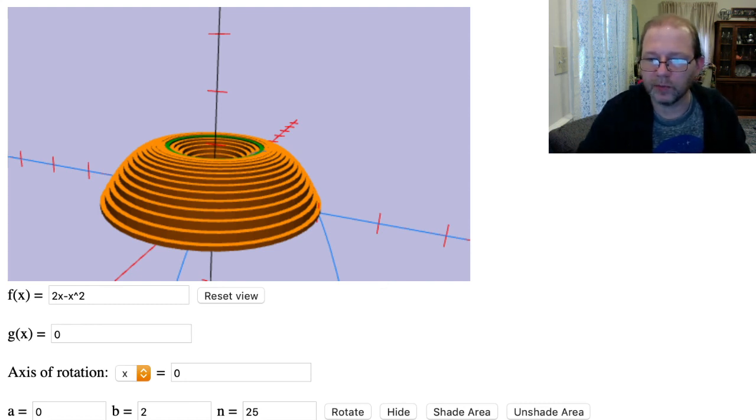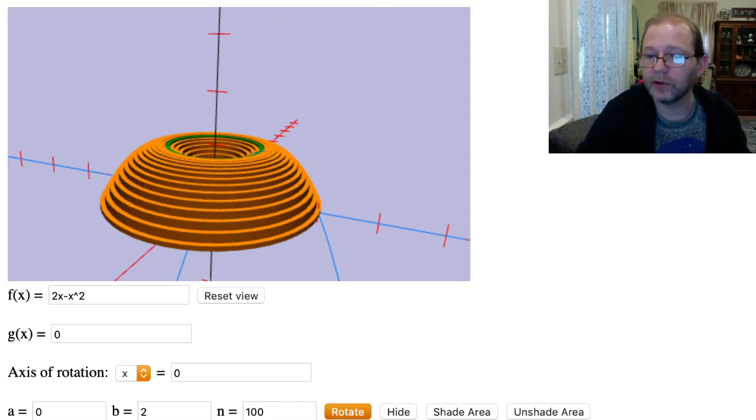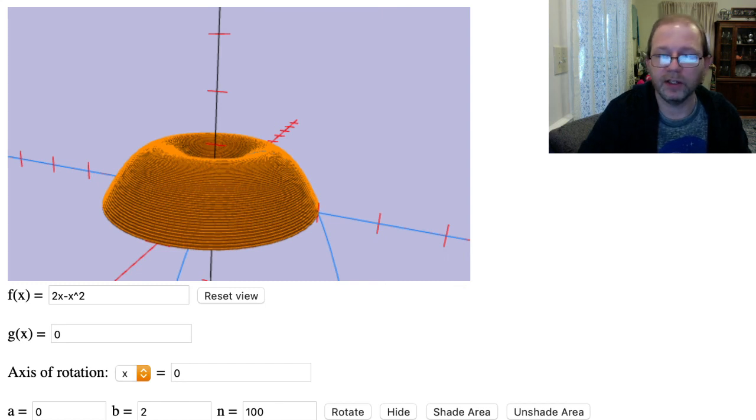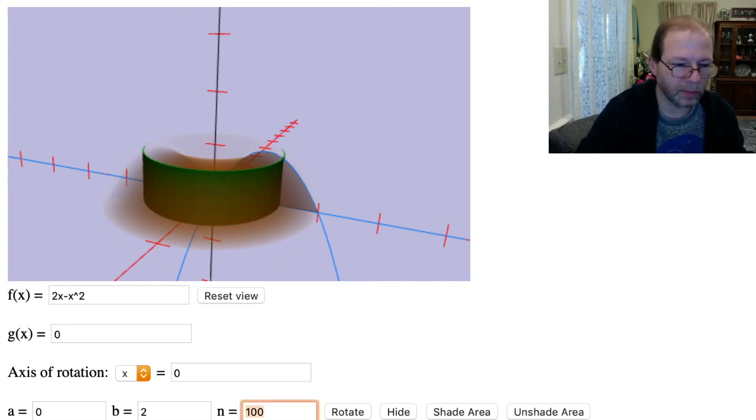The idea here is we break it into a whole bunch of these shells. Let's look at a hundred shells. And each of those shells is going to have a given volume, and we'll add those up. So let's go back and work it out on the iPad.